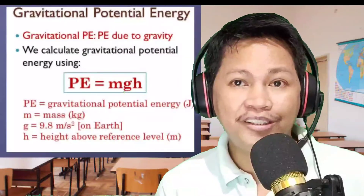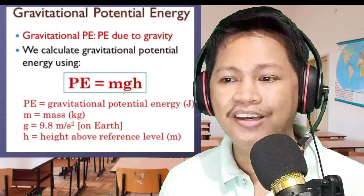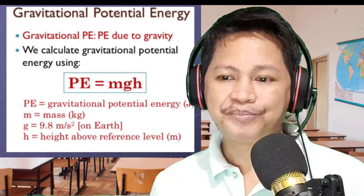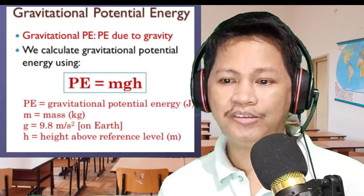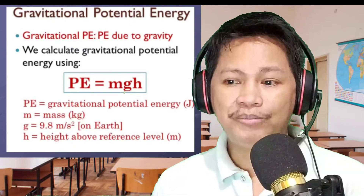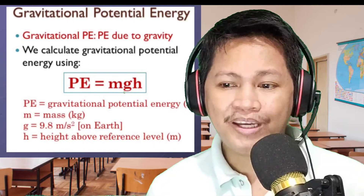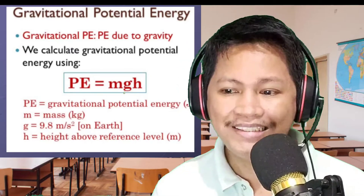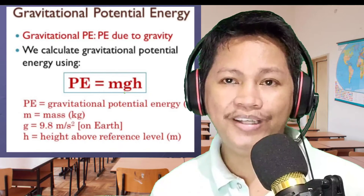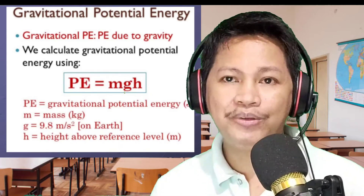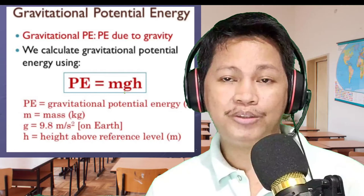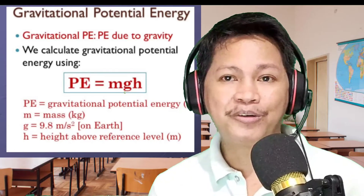To review: potential energy due to gravity is calculated using the formula PE = mgh, where PE stands for gravitational potential energy expressed in joules, m is mass, g is 9.8 meters per second squared on Earth, and h is height above the reference level. We specify 'on Earth' because on the Moon, gravity is lesser compared to Earth.